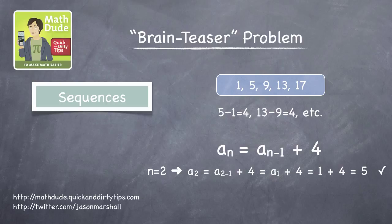For the third element, n equals 3. a sub 3 equals a sub 2 plus 4, which is 5 plus 4, that equals 9. It works again.